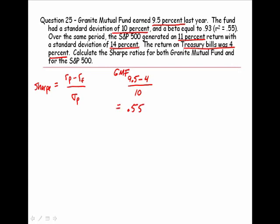Now let's calculate the Sharpe ratio for the S&P 500. The S&P generated an 11% return, the risk-free rate is 4%, and the standard deviation of the S&P 500 was 14%, generating a Sharpe measure of 0.50.